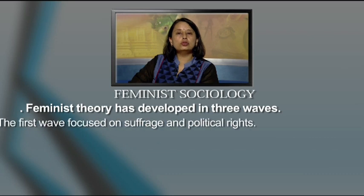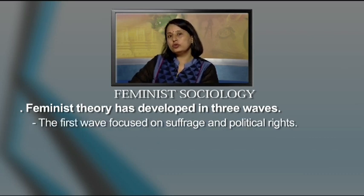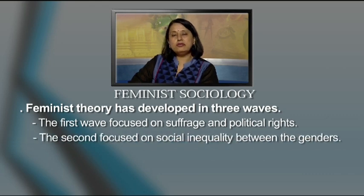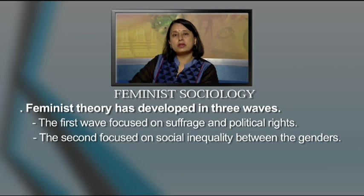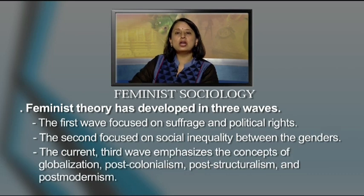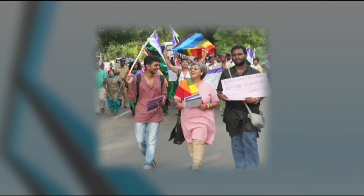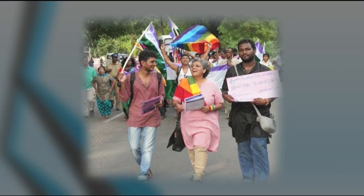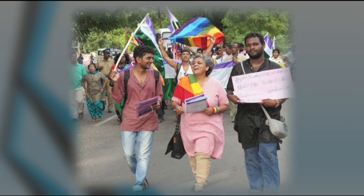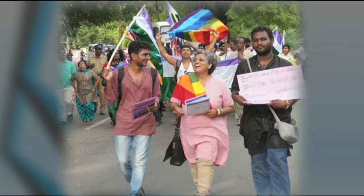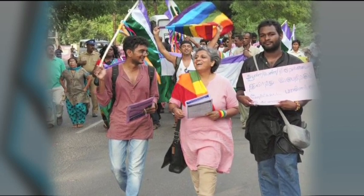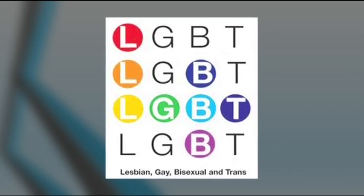Feminist theory developed in three waves. The first wave focused on suffrage and political rights — women getting equal voting rights. The second wave focused on social inequality between the genders, with women protesting existing inequalities between men and women. The third wave started looking at gender from the point of view of globalization, post-colonialism, post-structuralism, and post-modernism — recognizing not just two genders but also homosexuality, transgenders, and the LGBT movement.